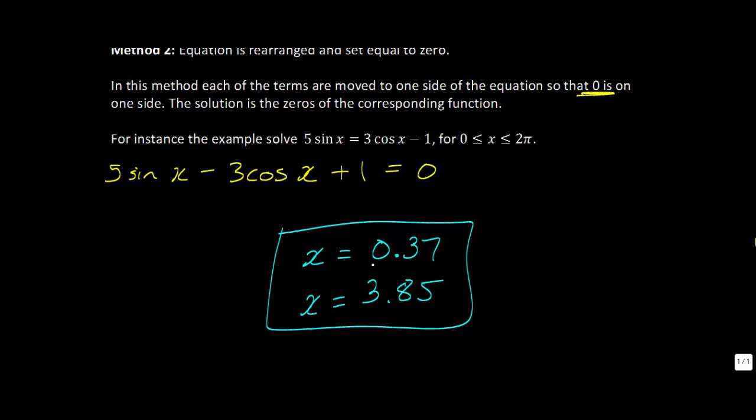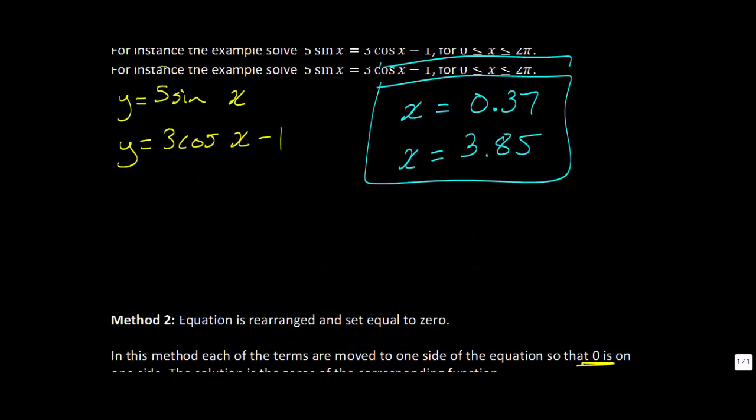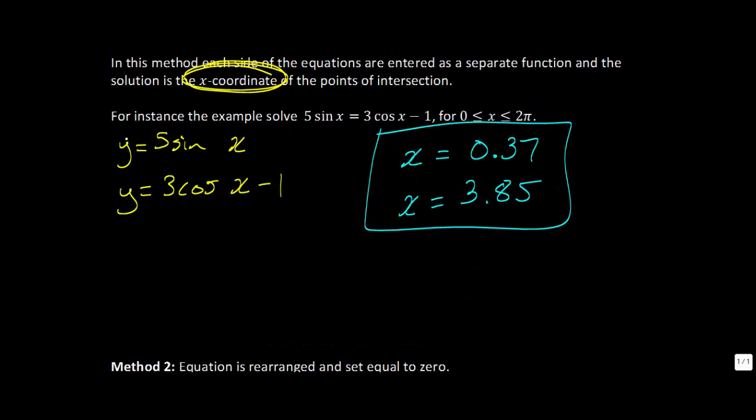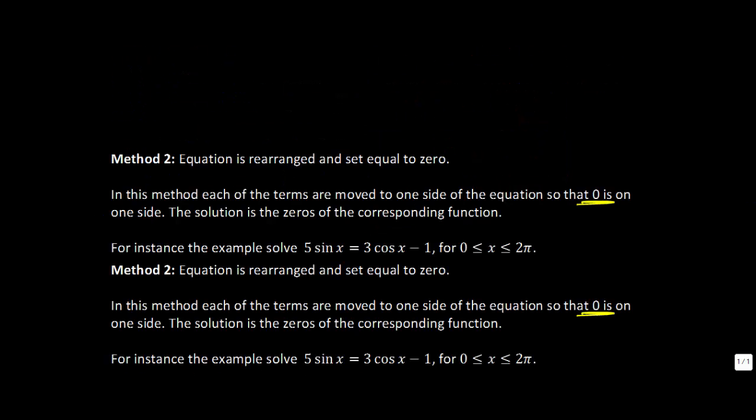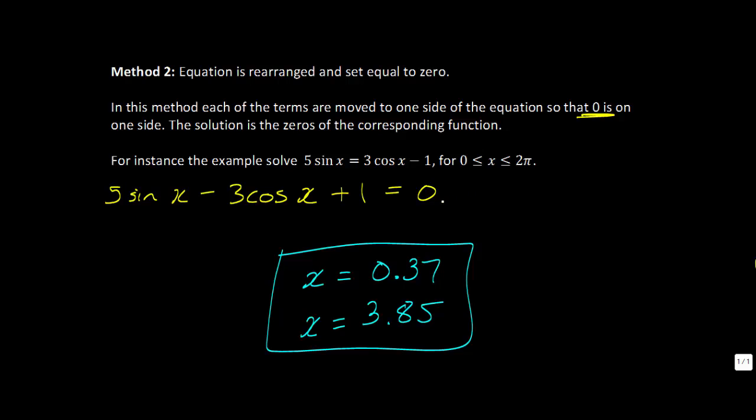So to recap, you'll notice that we got the exact same solutions doing either of the methods. So method one was when we went and took our equation and we created two different functions for it, one with the left hand side and one with the right hand side. And method two is when we set everything equal to zero and we found where our graph crossed the x-axis. Okay, so that gives you two different strategies depending on the question one might be easier than the other.